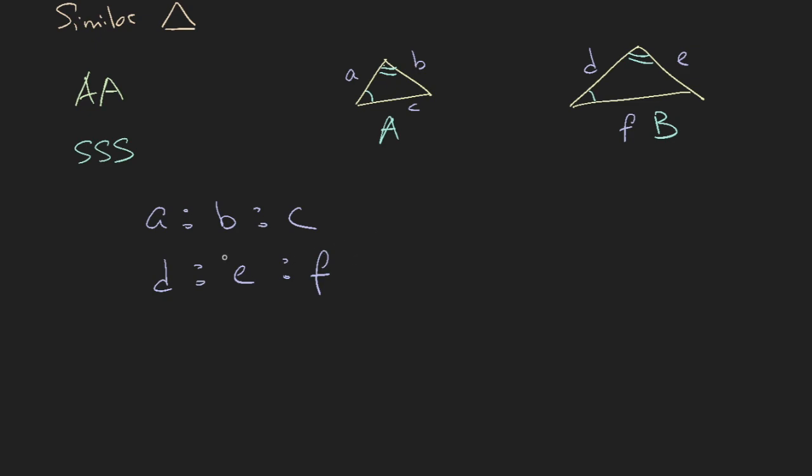Now this is self-explanatory because SSS will also mean AA. In fact, this SSS, the ratio of the sides is the same, is the exact definition of a shape that is zoomed in or zoomed out, like the photocopier. So this is the definition of similar.